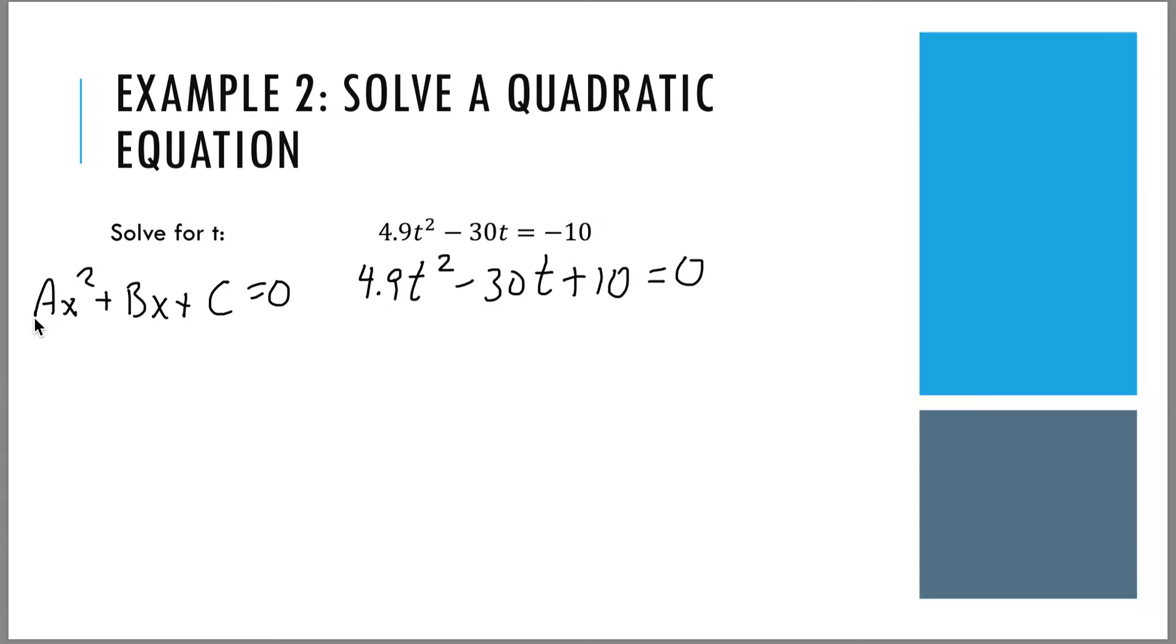This means that whatever coefficient, whatever number is in front of the squared term, it's 4.9 here, that is a. Whatever is in front of the linear term, the term that just has the x or t, whatever is in front there, that's b. And then, the term that is just a number by itself, that's c. Now that we have gotten the variables a, b, and c from our equation, we can now plug them into the quadratic formula.